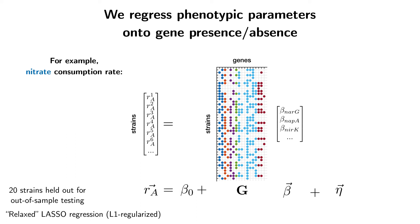To train this regression, we use around two thirds of our strains, about 42 strains. Because we're concerned about the model overfitting on our training set, we hold out 20 of our strains for out of sample testing.